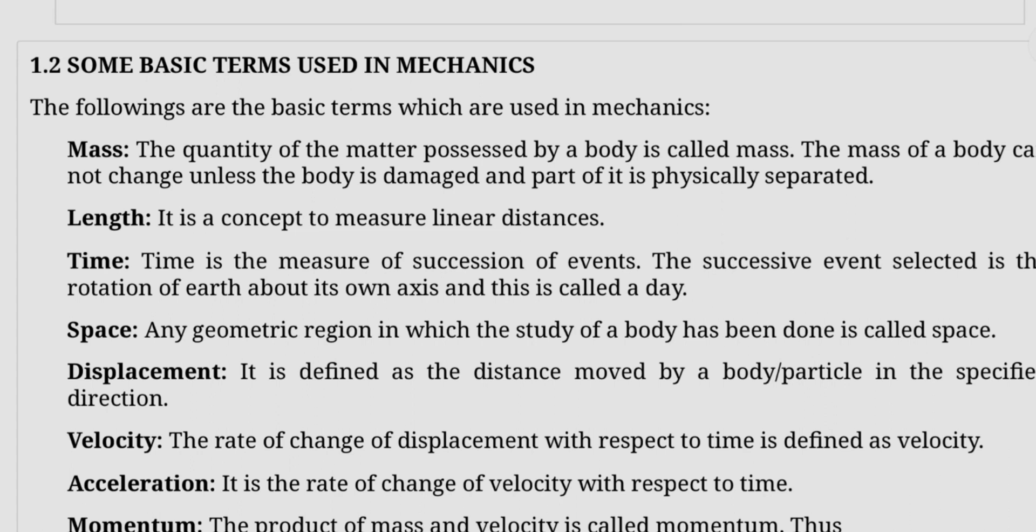Then space. Any geometric region in which the study of a body has been done is called space. Displacement is a vector quantity. We will discuss vector and scalar quantities in further sessions. Displacement is the distance moved by a particle in specified directions. Next, velocity. The rate of change of displacement with respect to time is defined as velocity. Velocity is also a vector quantity.